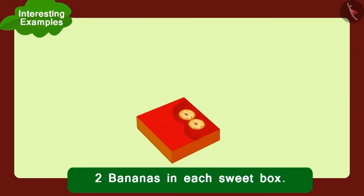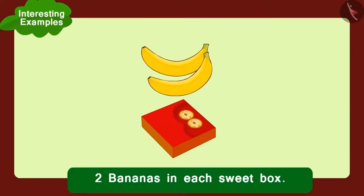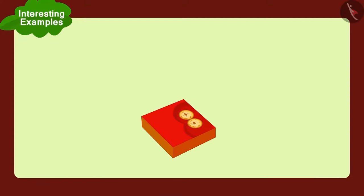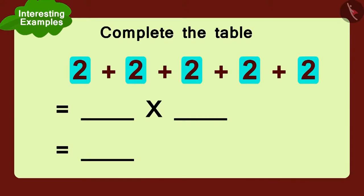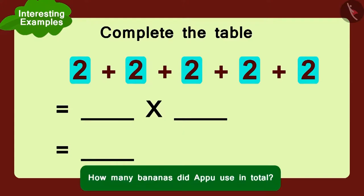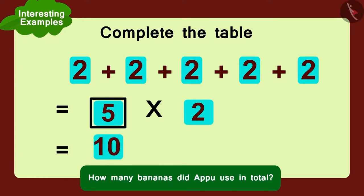Appu used two bananas for each sweet box, and he made five such boxes. Can you complete this table and tell how many bananas did Appu use in total? This is absolutely correct answer. Appu used five multiplied by two. That is ten bananas.